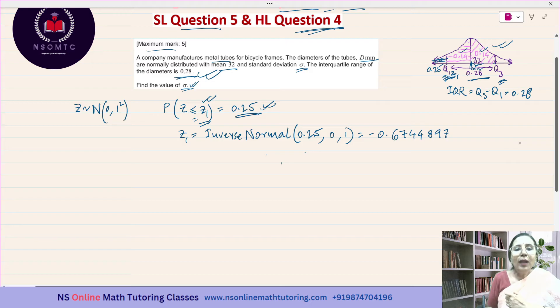I am getting the value of z1 as negative 0.67448897. So z1 equals negative 0.67448897.